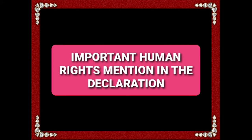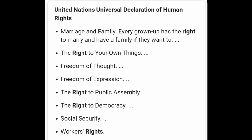Some of the rights mentioned in the Declaration of Human Rights are: Number 1 — all humans are born free and are equal before law. Number 2 — right to education and work. Number 3 — freedom to travel anywhere. Number 4 — freedom of worship.